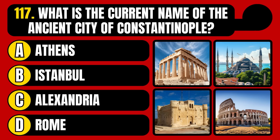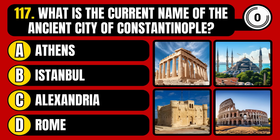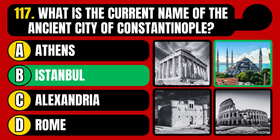What is the current name of the ancient city of Constantinople? Athens, Istanbul, Alexandria, or Rome? The correct answer is option B, Istanbul.